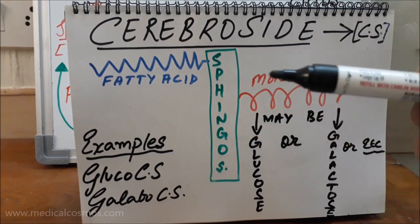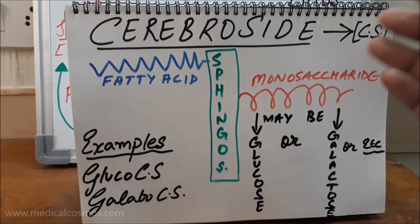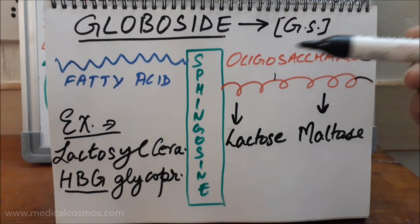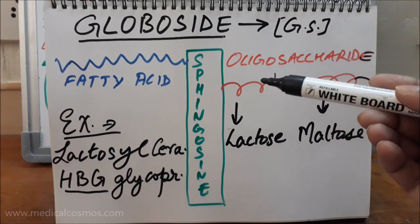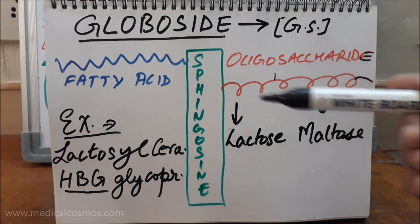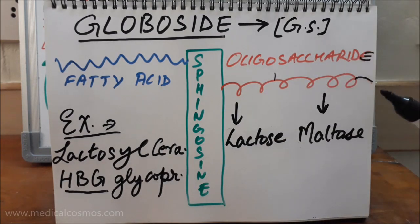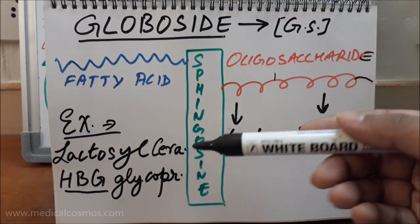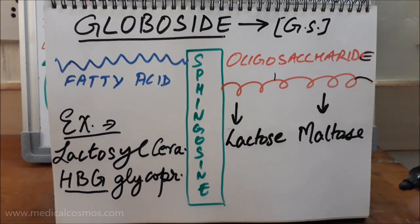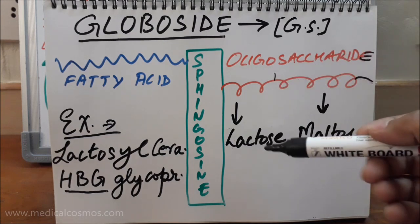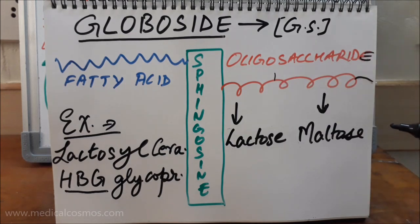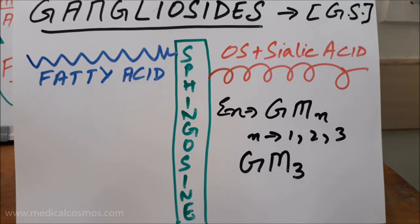In globosides, an oligosaccharide is conjugated with the ceramide. An example is lactoside ceramide, and globosides are found in human blood grouping glycoprotein biomolecules, playing an important part in human blood grouping. The sugar component can be lactose or maltose.